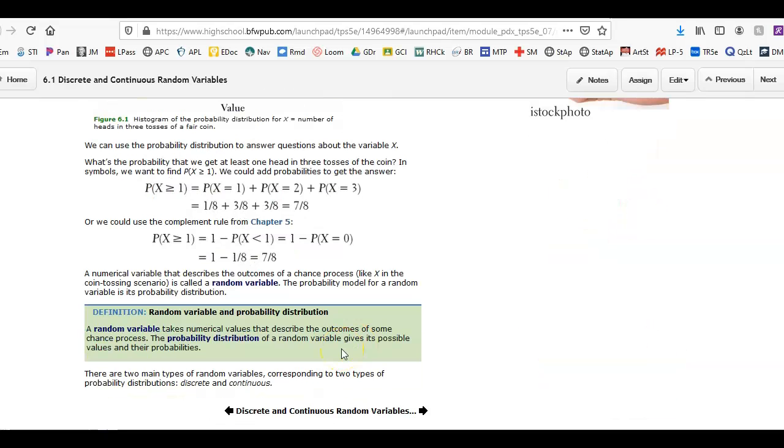So a random variable takes on numerical values that describe some chance process. So here is the number of heads when you flip a coin three times. It could be the number of twos that you roll when you roll a dice five times. So this is discrete random variables. We'll talk about continuous later on.